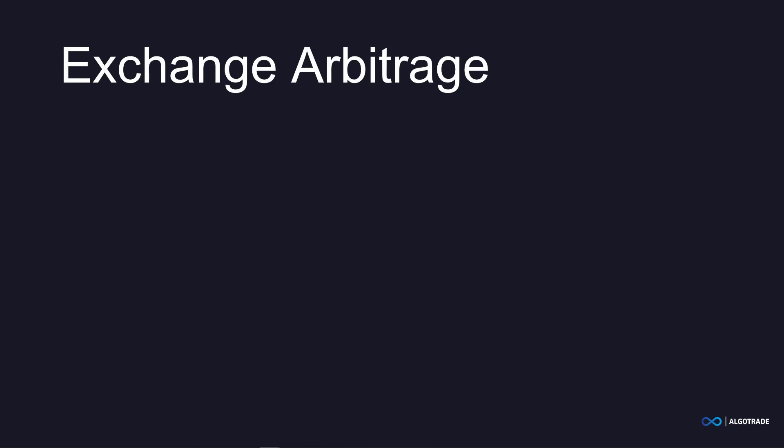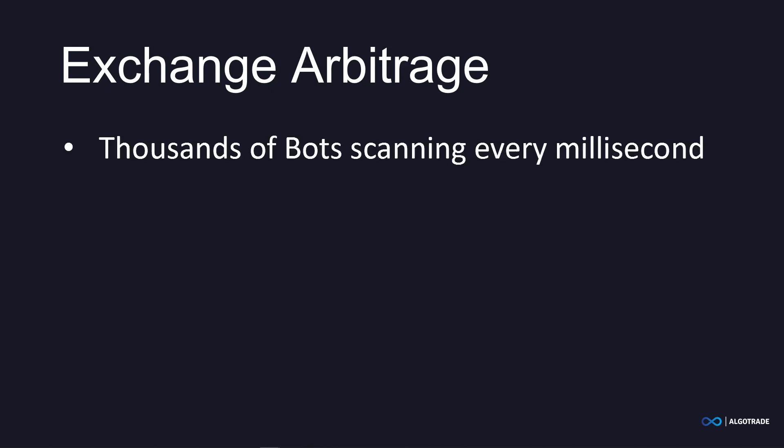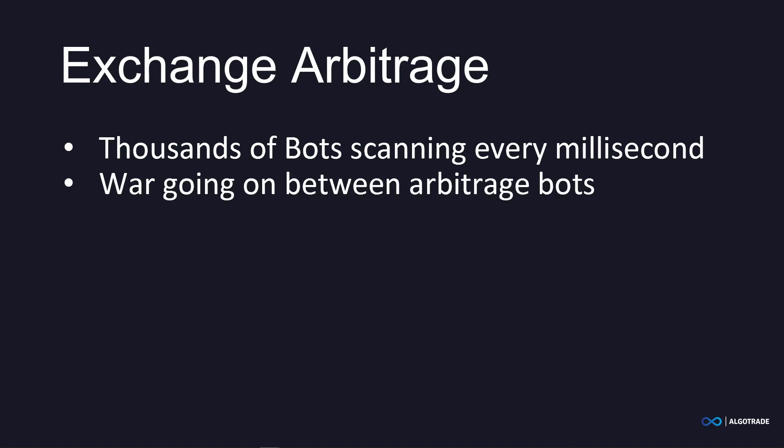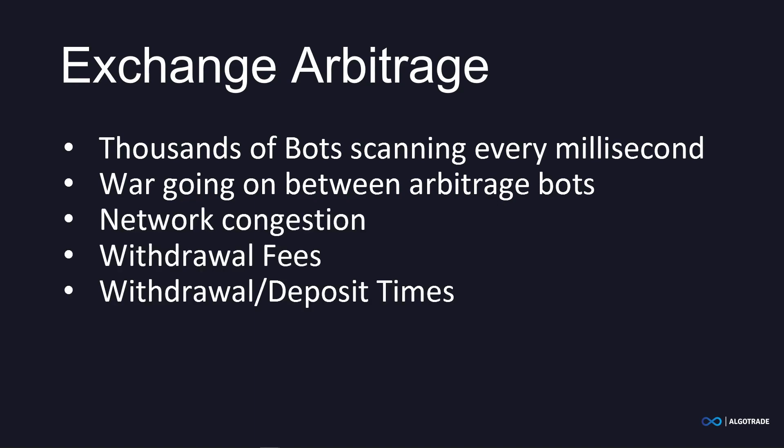With the rise of crypto trading bots, arbitrage opportunities have become smaller and smaller because there are thousands of bots scanning every exchange every millisecond. As soon as they spot an arbitrage opportunity, they take advantage of it. So in the background of all exchanges, there is a literal war going on between arbitrage bots, making it harder and harder to spot opportunities. Other problems like network congestion, withdrawal fees, and the time it takes to transfer from exchange A to exchange B make exchange arbitrage not easy anymore.